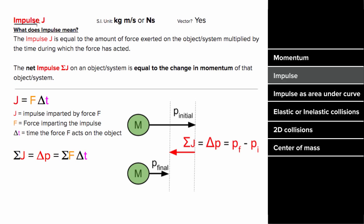What does impulse mean? The impulse is the amount of force exerted on an object or system, multiplied by the time during which that force was acting. So in equation form, that means that J, the impulse, is equal to the force multiplied by how long that force was acting.